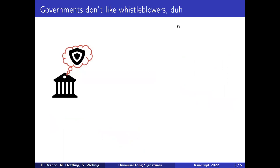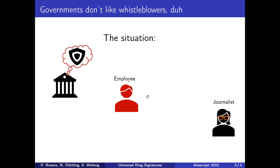Governments don't really like whistleblowers and they do want to protect themselves against them, even willing to punish them. The setup for a whistleblower with ring signatures is as follows: an employee wants to leak some data to a journalist. The whole reason we want signatures is they should be able to prove that they have access to the kind of sensitive data they send, and they're not just a Reddit troll.